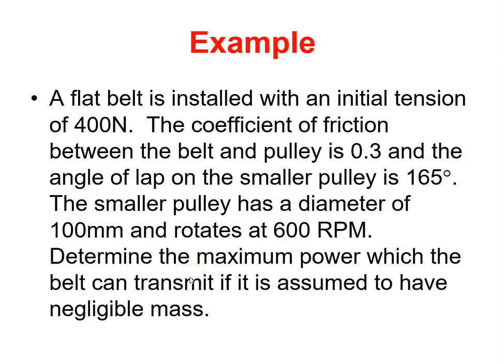In this example we have a flat belt installed with initial tension of 400 newtons. The coefficient of friction between the belt and pulley is 0.3, and the lap angle on the smaller pulley is 165 degrees. The smaller pulley has a diameter of 100 millimeters and rotates at 600 rpm. Determine the maximum power which the belt can transmit if it is assumed to have negligible mass.